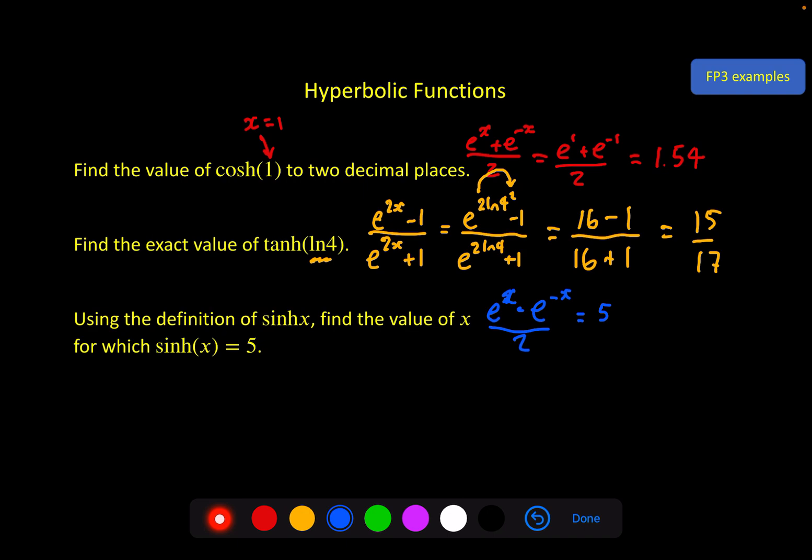And the first step is obvious, multiply both sides by 2. E to the x minus e to the minus x equals 10. Depending on how much you remember from your exponentials, the second step may or may not be quite so obvious, but if you multiply this whole expression by e to the x, then you should get a quadratic. E to the 2x minus 1 from the e to the minus x times e to the x, and the 10 if I bring that on this side, minus 10 e to the x equals 0.